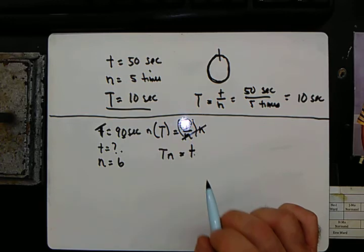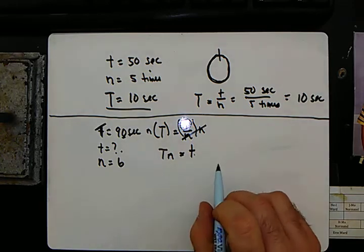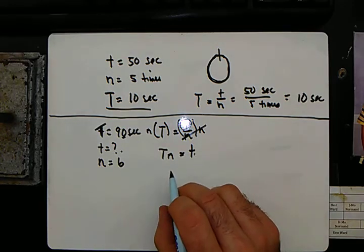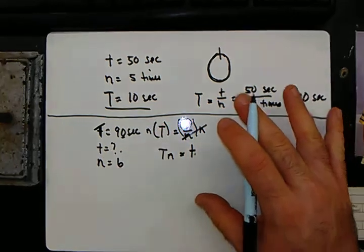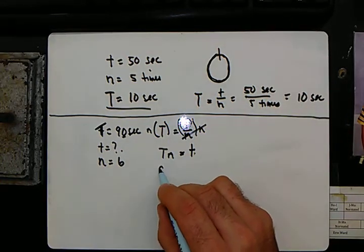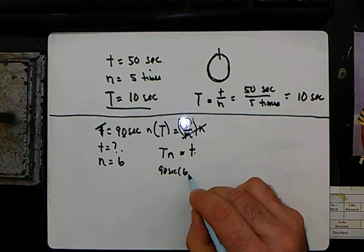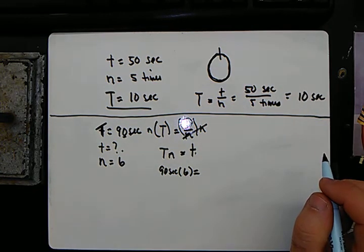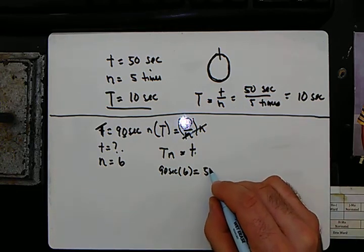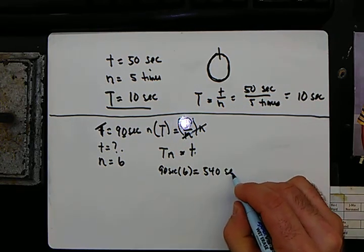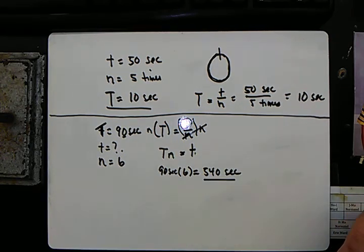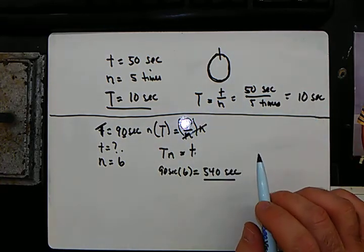Period times the number is going to be the time that it takes for the total activity. So my period is 90 seconds. The number of times is six. So our answer is 540 seconds to do that activity.